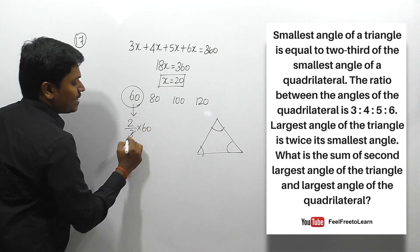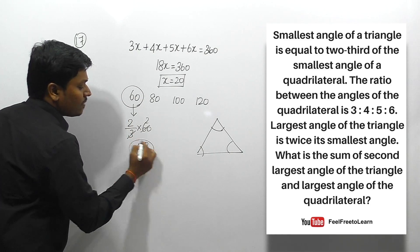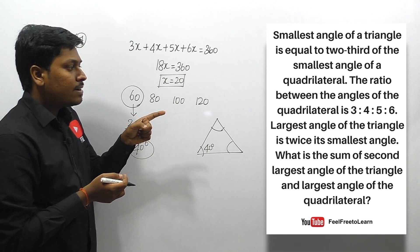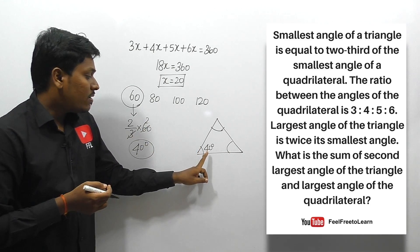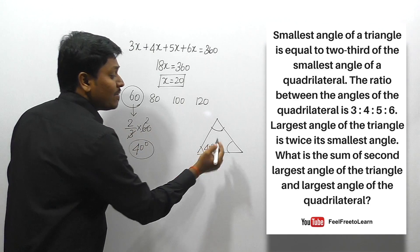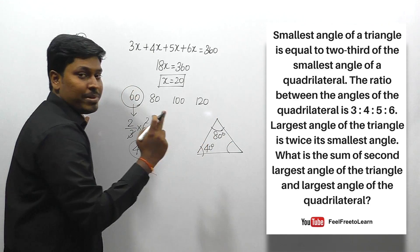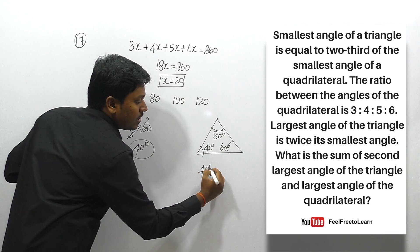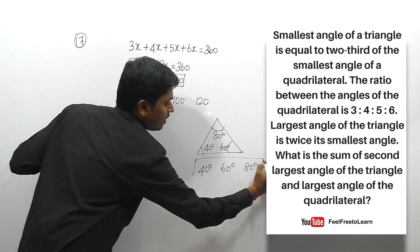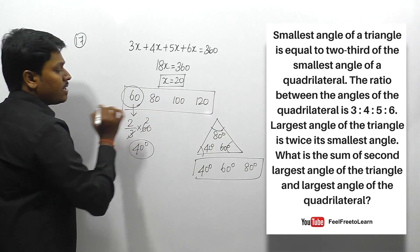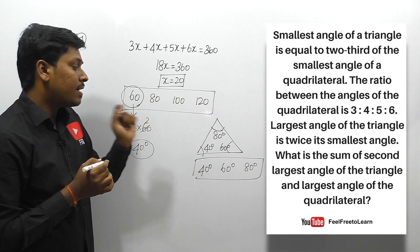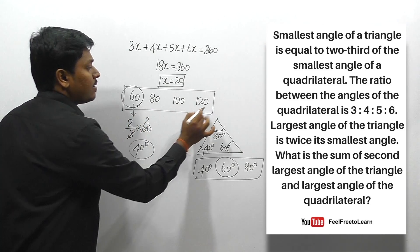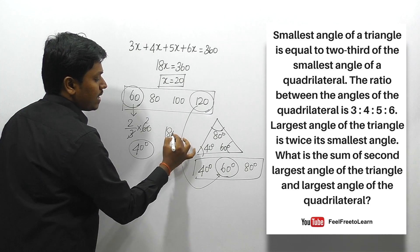The smallest angle of the triangle is 40 degrees. The largest angle of the triangle is twice the smallest, so 2 × 40 = 80 degrees. The sum of all three angles must be 180, so 80 + 40 = 120, and 180 − 120 = 60 degrees for the third angle. The triangle angles are 40, 60, and 80 degrees. The largest angle of the quadrilateral is 120, so the answer is 120 + 60 = 180.